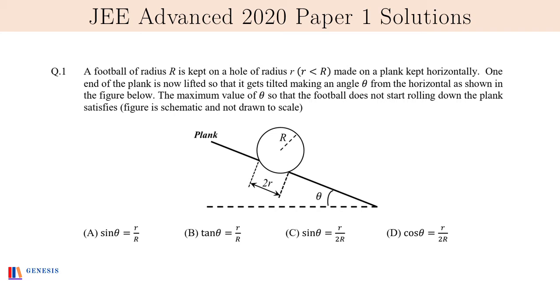The question in essence: a football has been placed on an inclined plane, and the inclined plane has a hole of radius small r. Now the inclination of the incline is increased and they're asking for the maximum value of theta so that the football does not start rolling down the plank. Four options are given to us.